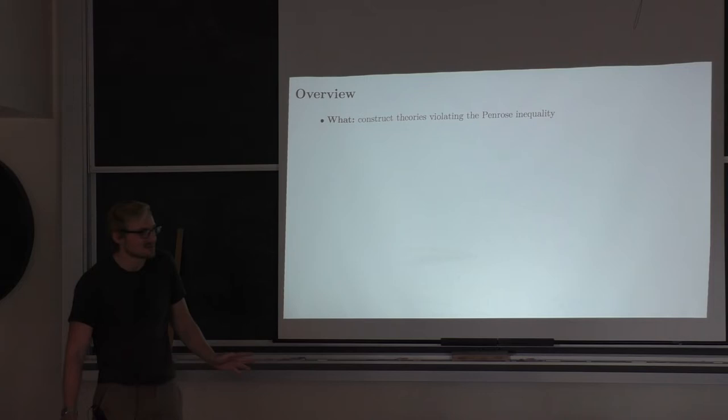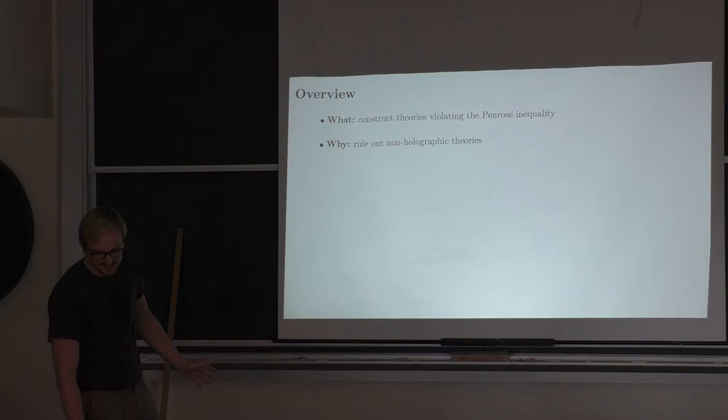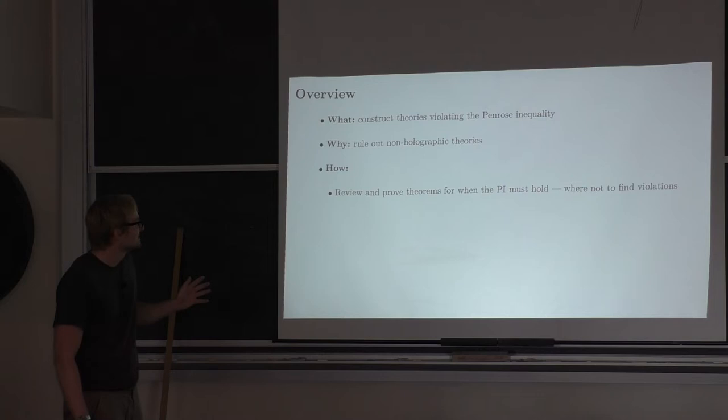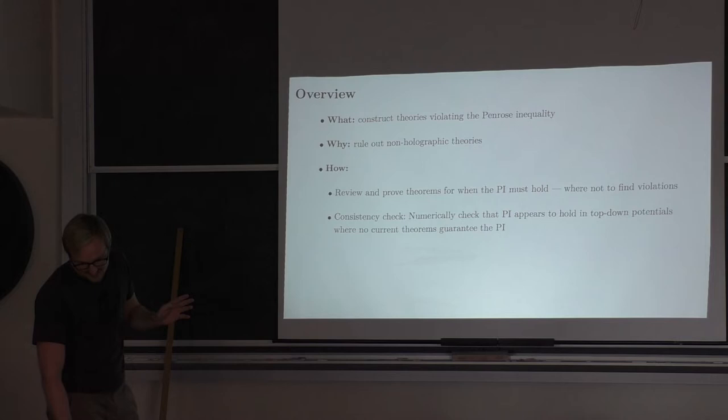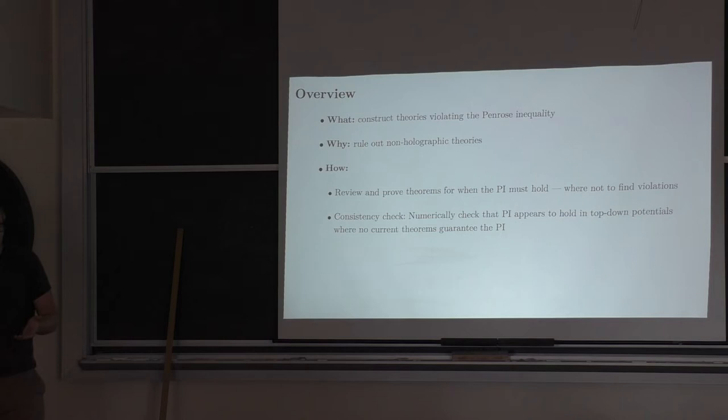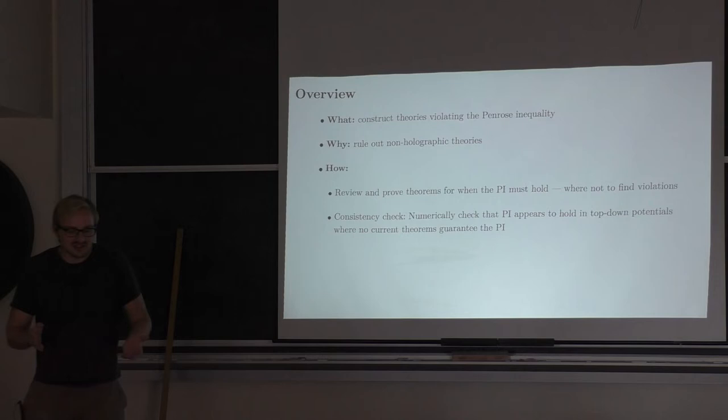So here's an overview. I want to construct theories that violate the Penrose inequality in order to rule out non-holographic theories. I will review and prove theorems for when the Penrose inequality must hold — telling us where not to look for violations. I'll do a consistency check by numerically verifying that the Penrose inequality holds for top-down string potentials where no theorems guarantee this. Then I'll numerically construct violations and produce exclusion plots in coupling space. Finally, I'll find an analytical exclusion condition analogous to the BF bound for higher couplings.